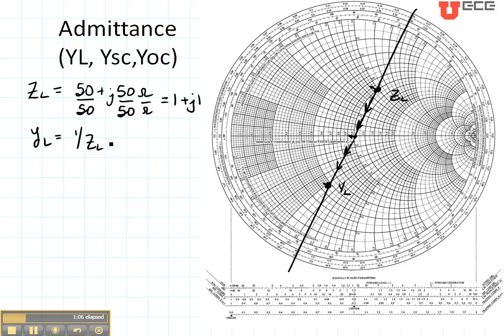Let's read the value of YL. YL has a real part of about 0.5. And it has an imaginary part which is negative. Remember down here we have the negative imaginary part. Read it right out here. It has a negative j0.5.